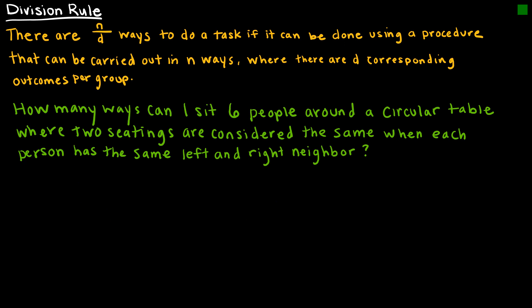The last rule is the division rule. It says there are n divided by d ways to do a task if it can be done using a procedure that can be carried out in n ways, where there are d corresponding outcomes per group. For example, I have a table with 6 places to sit, and I'm going to seat 6 people there.